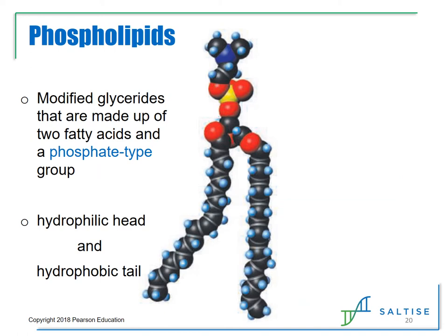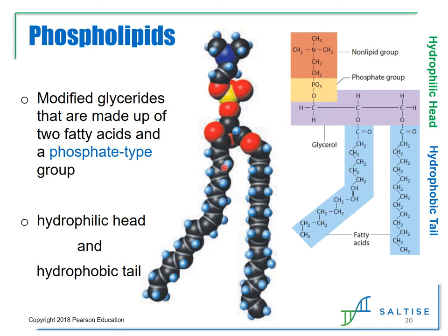Phospholipids are an important type of lipid because they are the main component in the cell membrane as well as membranes of organelles inside the cell. They are called phospholipids because a phosphate group links a diglyceride with a non-lipid group. The non-lipid group, along with the phosphate group and the glycerol, makes up the hydrophilic head because it contains polar functional groups with highly electronegative nitrogen and oxygen atoms. The fatty acid portion makes up the hydrophobic tail, so phospholipids are special in that they have both a hydrophilic region and a hydrophobic region.